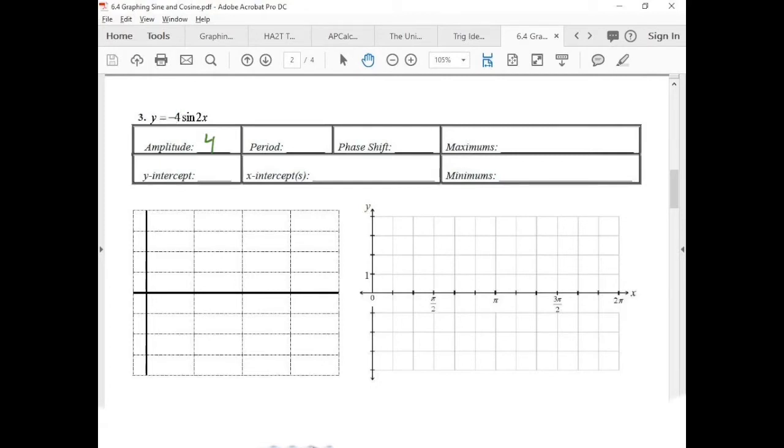Our period, because there's a 2 inside multiplying to the x, we've got to take 2π, which is the standard period, the regular period, and we're going to divide that by 2. So what is our period? It's π. So we get π right here.